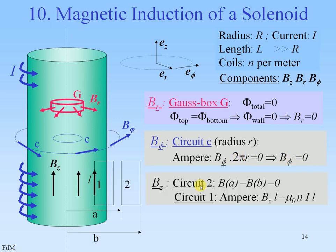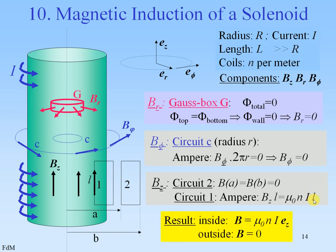Then the third component, Bz. We choose two circuits at distances a and b from the midline. Circuit 2 has no current inside, so B is zero outside the solenoid. Inside, the circulation around the rectangle gives a contribution from the left side only, and the other three sides have no contribution. So Ampere gives us Bz times l equals mu-naught times n·i times l. The result is: inside, B is mu-naught·n·i; outside, B is zero.